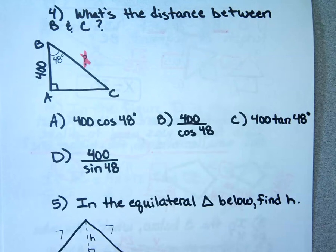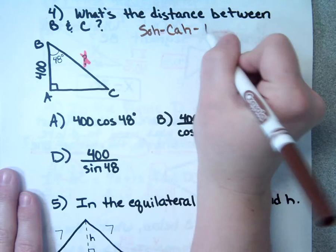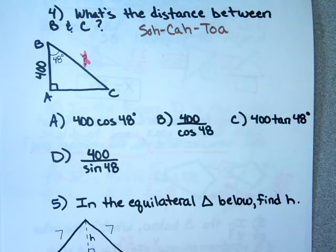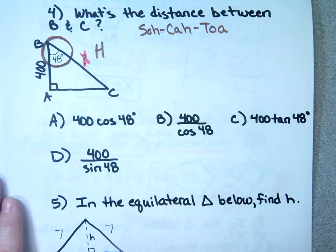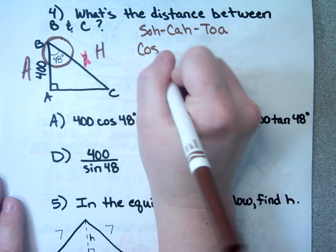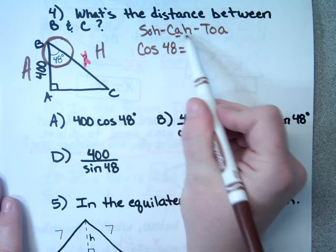First I want to label the hypotenuse if it's in the picture. Whatever's across from the right angle is the hypotenuse. Then I go to the 48-degree angle. What would you label the 400? Adjacent. So we use cosine. It goes cosine of 48 equals A over H, so that's 400 over X.